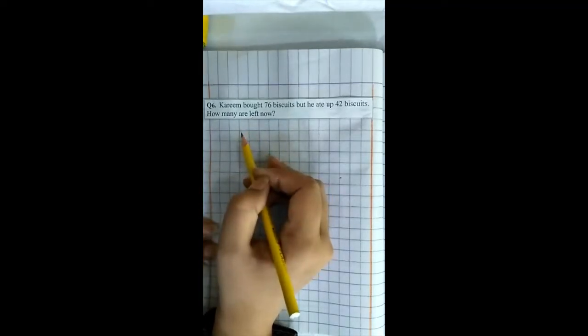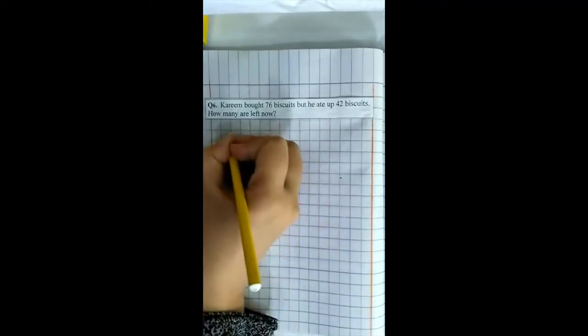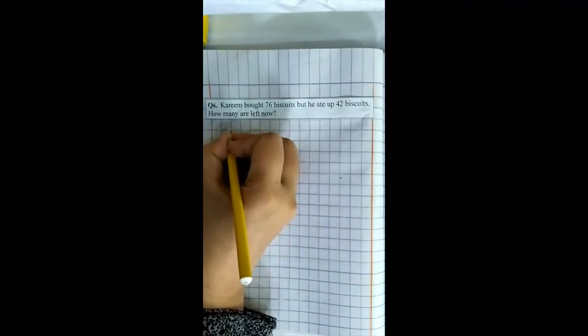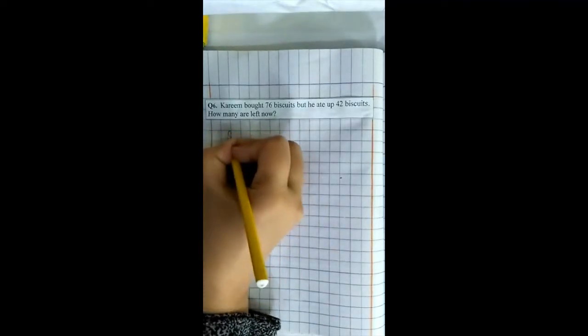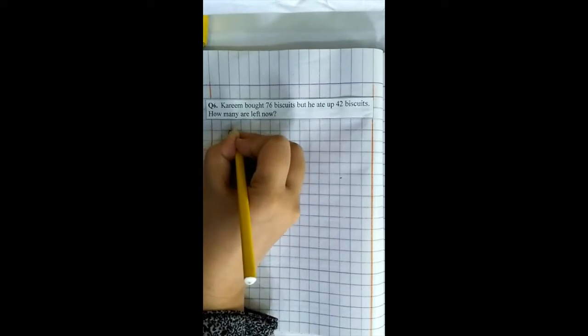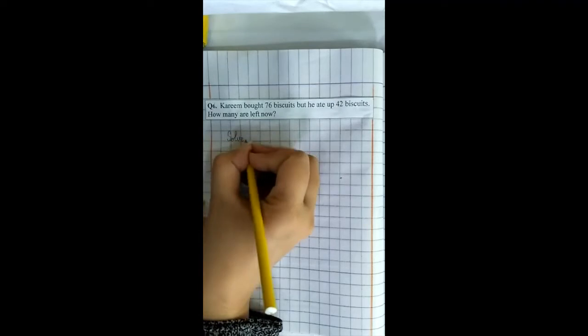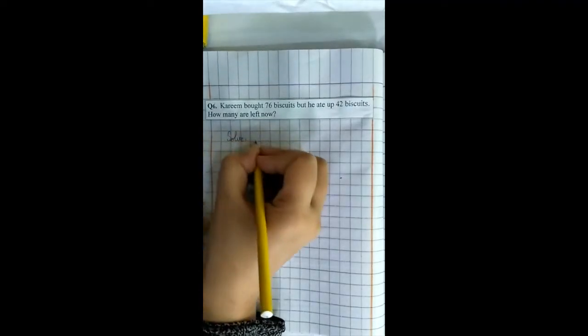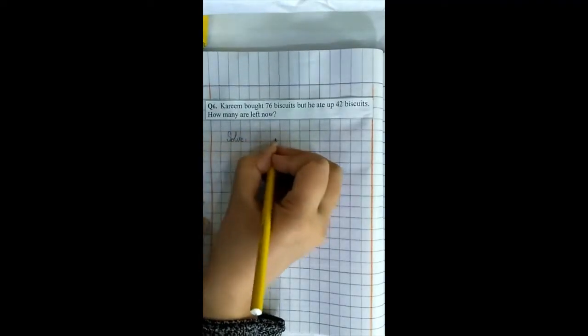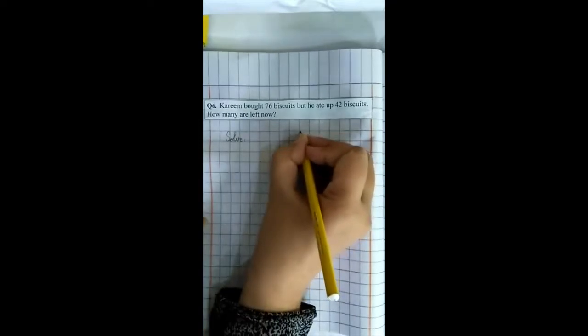Now we start the question. Start from here. Write here solve. Put the sign of colon. Skip five blocks: one, two, three, four, five. Write here TU.